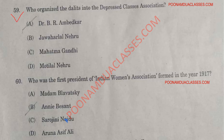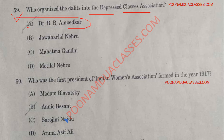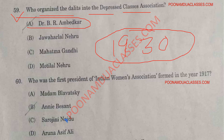Question number 59: Who organized the Dalits into the Depressed Class Association? The correct answer is option A — Dr. B.R. Ambedkar. Dr. B.R. Ambedkar organized the Dalits into the Depressed Class Association in 1931, the same year the Dandi March was organized by Mahatma Gandhi. Dr. Ambedkar also fought for the first separate electorate for Dalits.